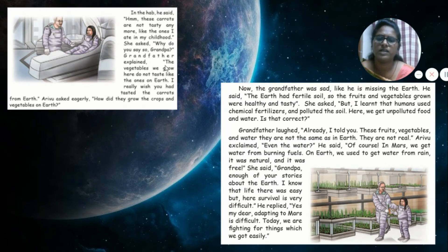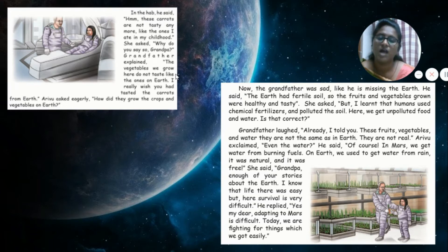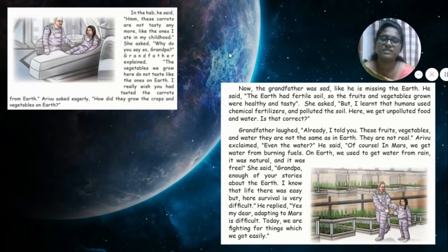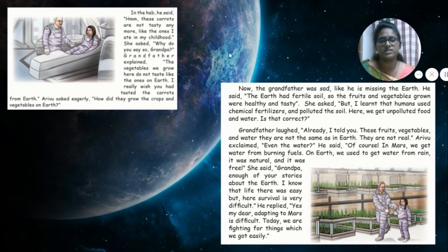Arumadhi asked, 'What did you say, Grandpa?' Grandfather explained, 'The vegetables we grow here do not taste like the ones on Earth. I really wish you had tasted from Earth.' Arumadhi asked eagerly, 'How did they grow the crops and vegetables on Earth?' Grandfather was sad, like he was missing the Earth. He said, 'The Earth had fertile soil, so the fruits and vegetables grown were healthy and tasty.'